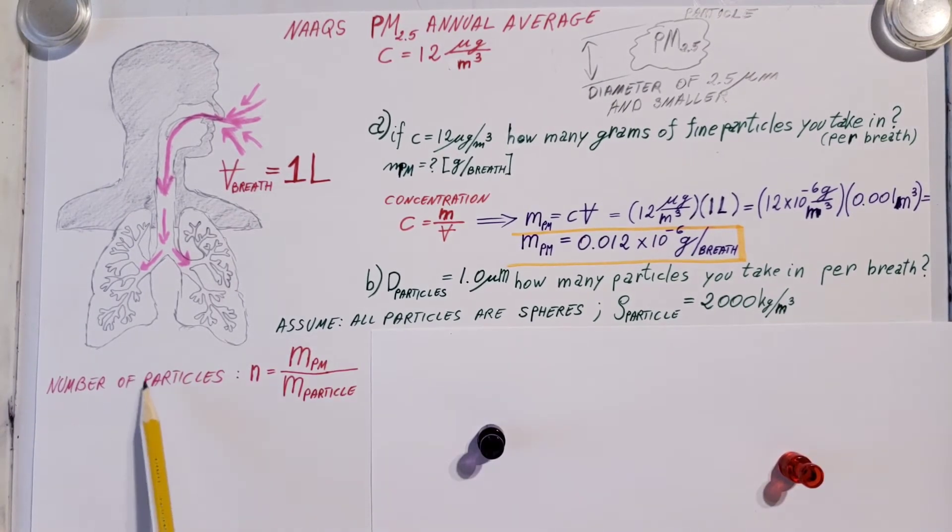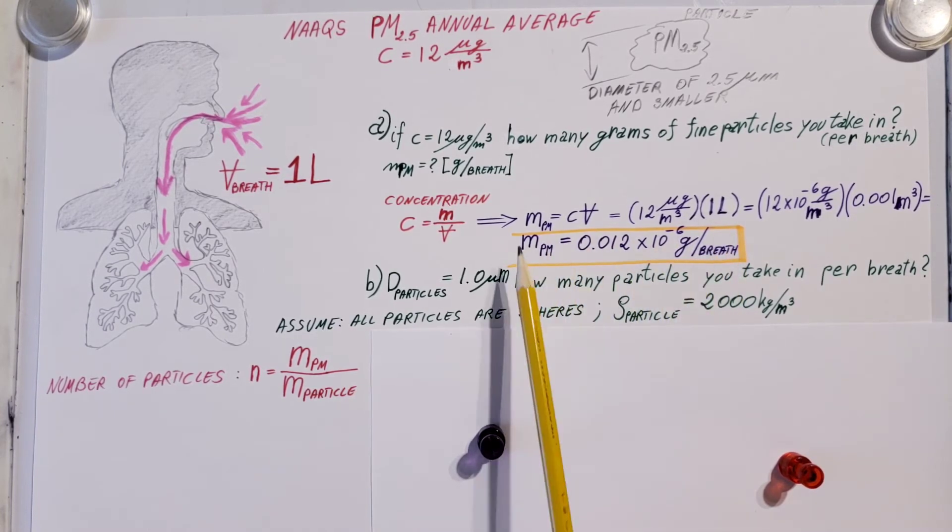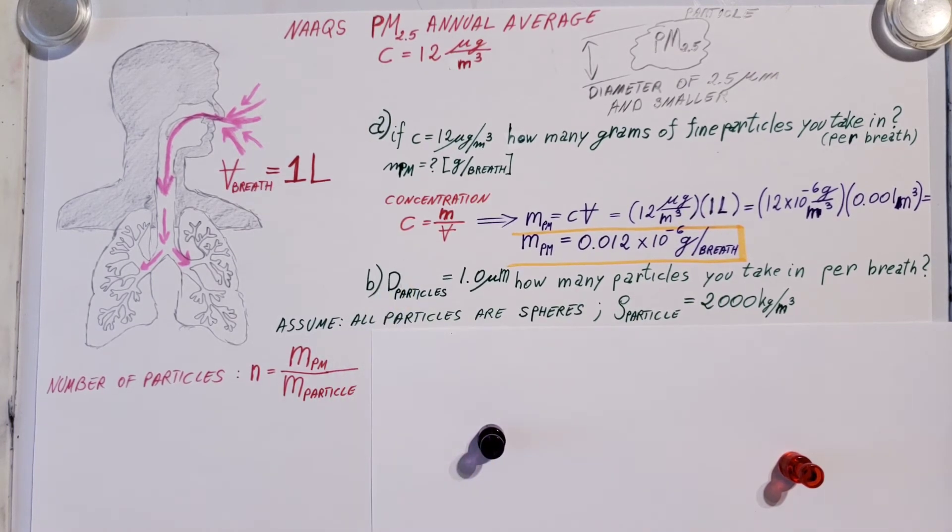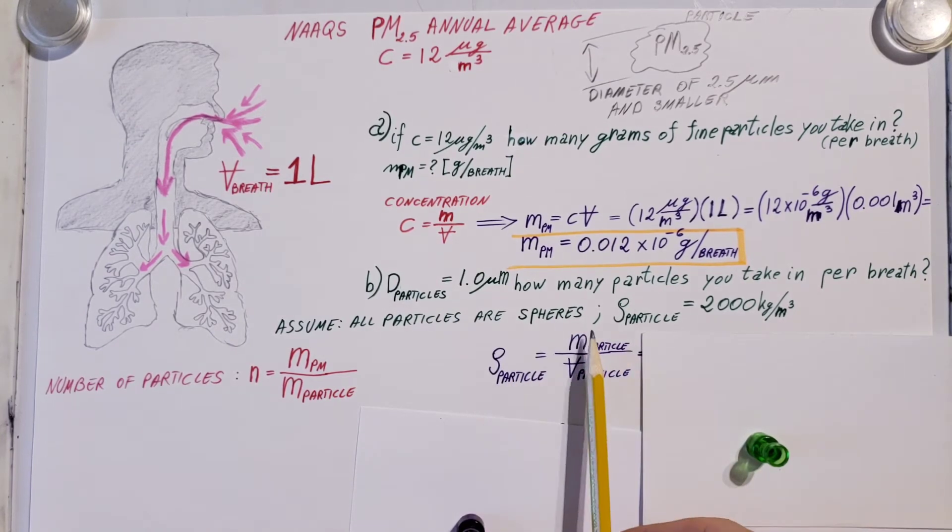Now, in order to find the individual particles—the number of particles we're breathing in—we can take a look at the fact that we already found the total mass of all the particles we take in with one breath. If we could find the mass of just one particle and divide them, we can find that number. We have density given and diameter, so we can use the density formula to find the mass of one particle.